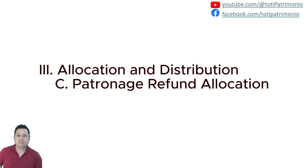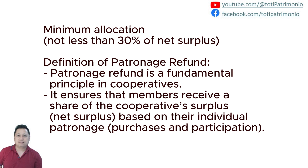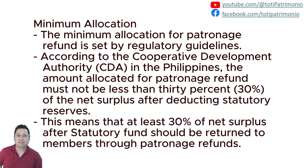We are now in letter C, which is the patronage refund allocation. Number one: the minimum allocation. What is the minimum allocation for the patronage refund? It is not less than 30 percent of the net surplus after deducting statutory funds. Patronage refund is a fundamental principle for cooperatives — it ensures that members receive a share of the cooperative's surplus based on their individual patronage, purchases, and participation. According to the Cooperative Development Authority in the Philippines, the amount allocated must not be less than 30 percent of the surplus after deducting statutory reserves.